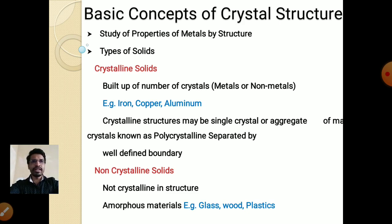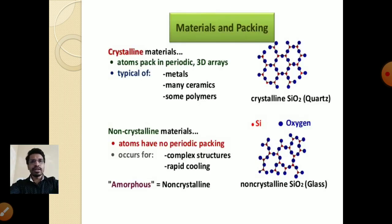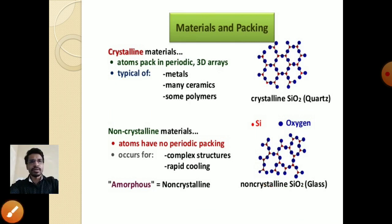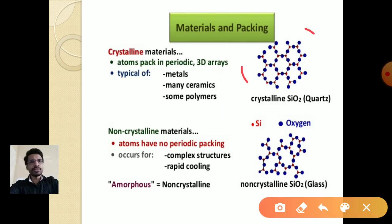This concept will be clearer with a figure. Here you can see crystalline silica, called quartz, and below it non-crystalline silica, called glass. In crystalline silica there is a periodic arrangement of atoms — hexagons are repeated in a regular pattern. But in the lower figure, there are pentagons and heptagons with no regular arrangement of atoms, that's why it is called non-crystalline.